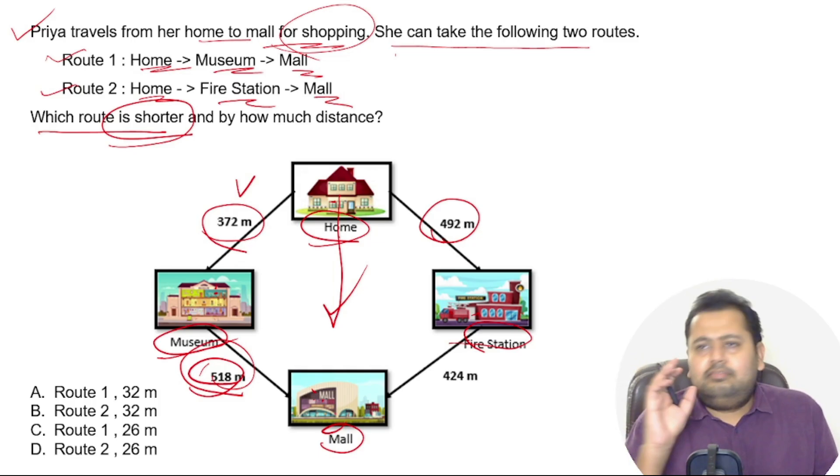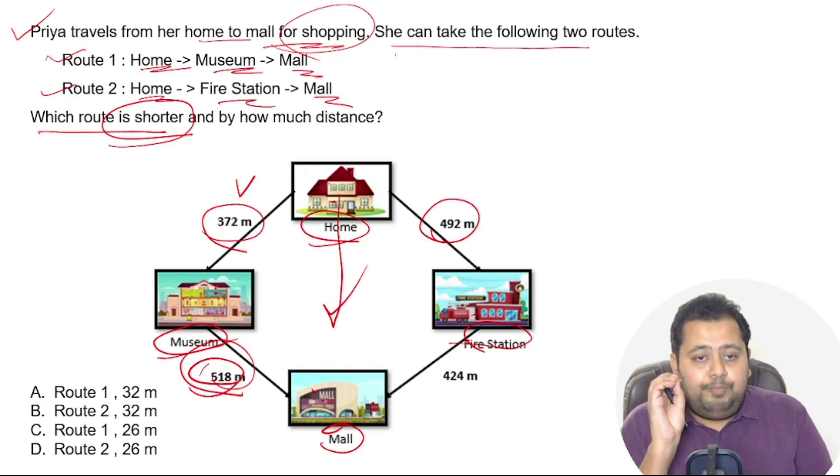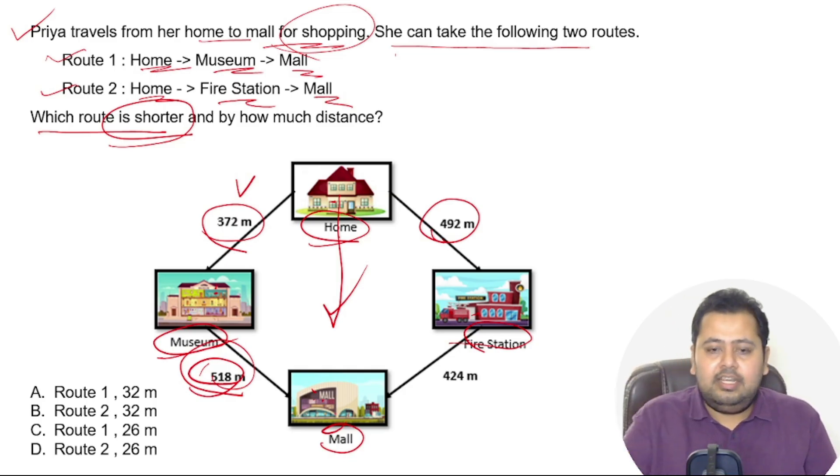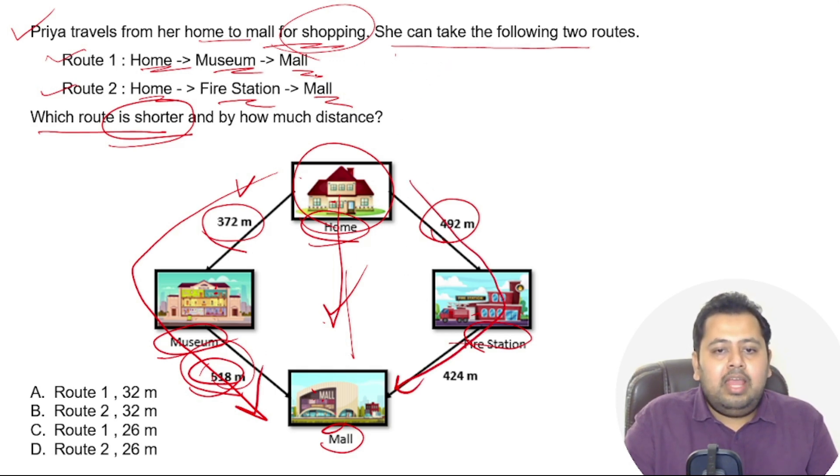I hope you would have already solved the question and gotten the answer correctly. Priya travels from her home to mall for shopping. She is going from home to mall. She has two directions: either she goes this way or she goes this way. We have to find which of these two routes are shorter. This is route one and this is route two.